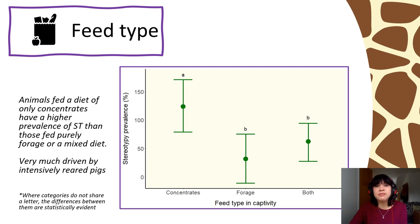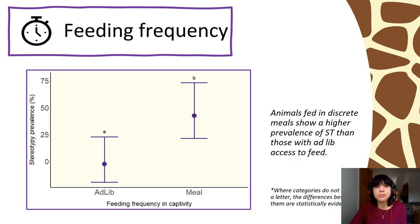Moving on to captive feeding variables: animals fed a diet consisting entirely of concentrates had a higher prevalence of stereotypy than those fed only forage or those on a mixed diet. This effect was largely driven by intensively reared pigs, as these are most commonly subject to a purely concentrate diet. Animals fed in discrete meals showed a higher prevalence of stereotypy than those with ad lib access to feed throughout the day and night.